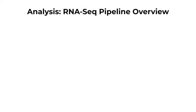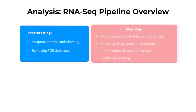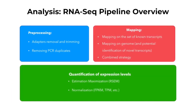Recall that a typical RNA-seq pipeline includes three main steps: pre-processing, mapping, and quantification. Pre-processing is needed to clean up our data by removing the adapters, trimming some of the reads, and removing the PCR duplicates.